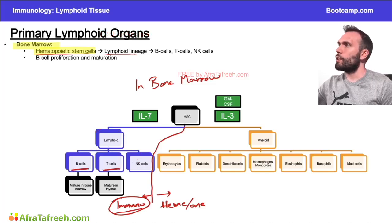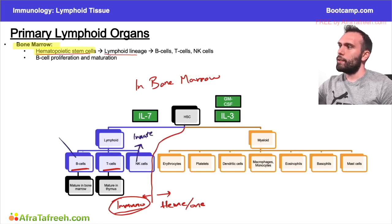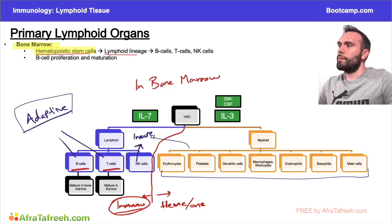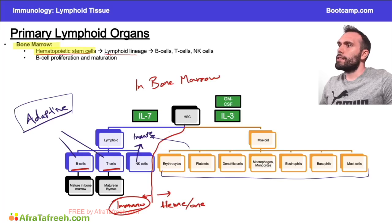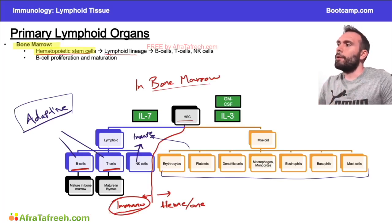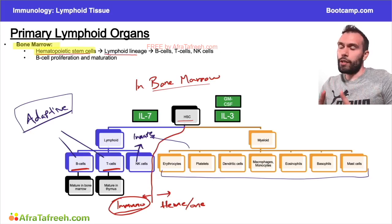The natural killer cells are going to be part of the innate immune system. The B cells and T cells are going to be part of the adaptive immune system. Everything else — the myeloid lineage cells — will also be part of the innate immune system. The important part is that all of these cells come from hematopoietic stem cells in the bone marrow and are initially formed there.